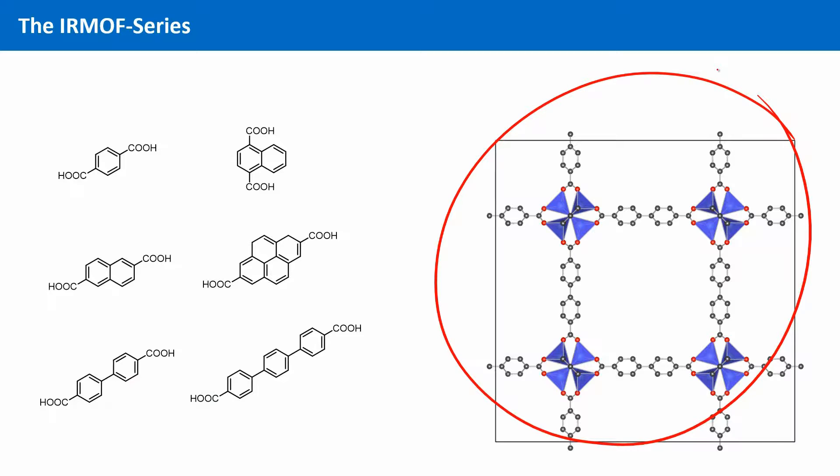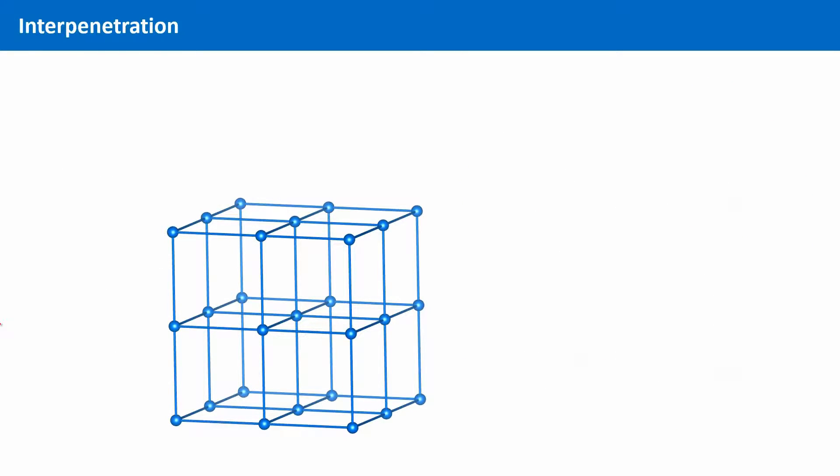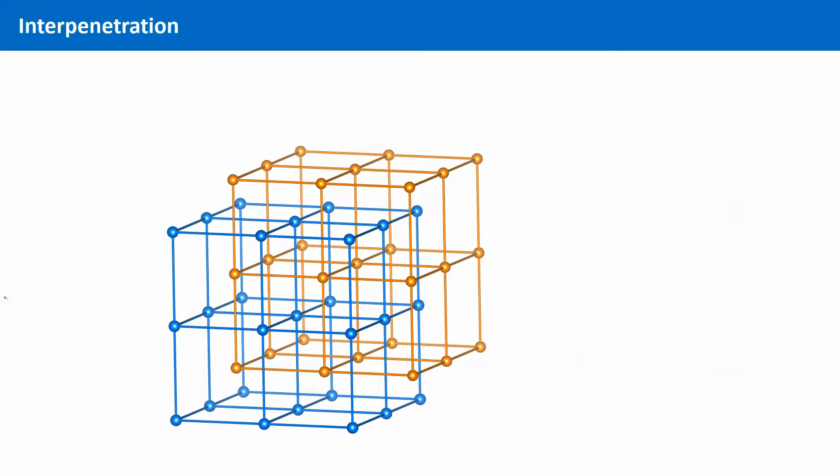The use of the elongated linker systems often leads to an entanglement in the crystal structure. This is called interpenetration, meaning that a second identical network may be formed. The two networks are interwoven with each other.